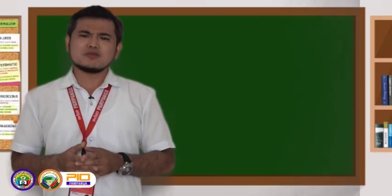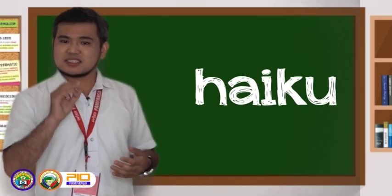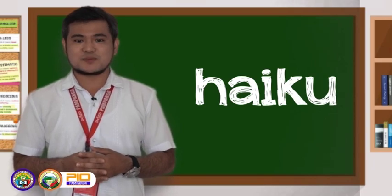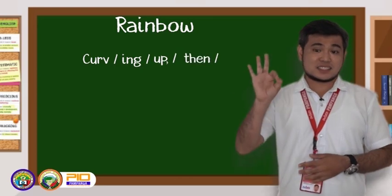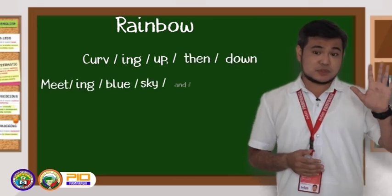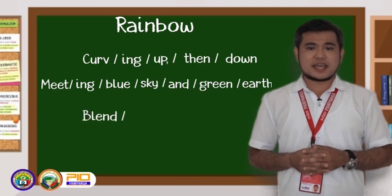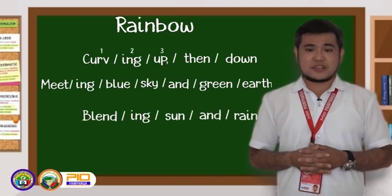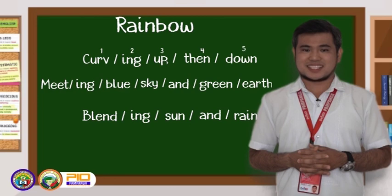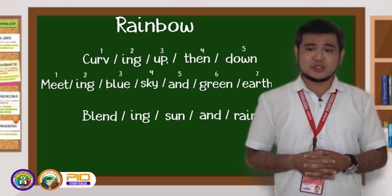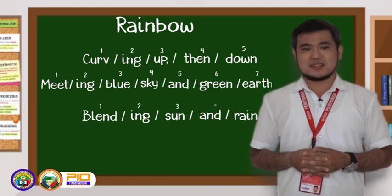Did you know that haiku is a three-line stanza with a 5-7-5 syllable count? Let me show you an example. Notice that it has three lines. The first line has five syllables, the second line has seven syllables, and the third line has five syllables again. Remember also that most haiku talk about nature, seasons, and animals.